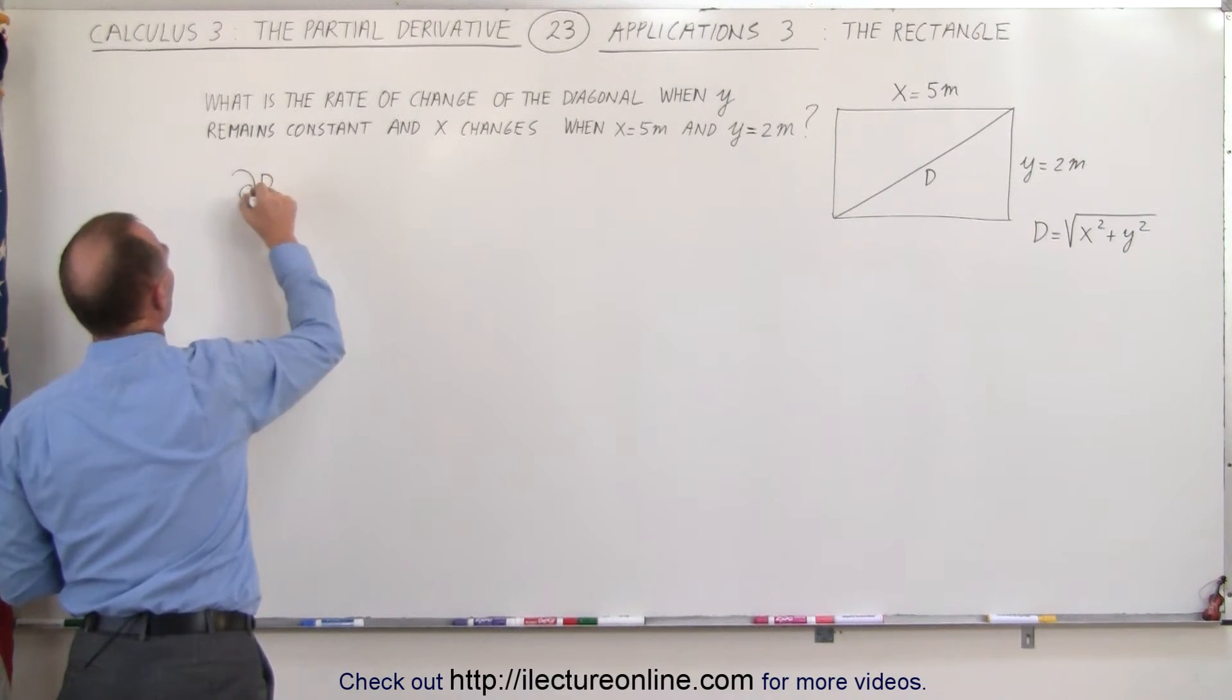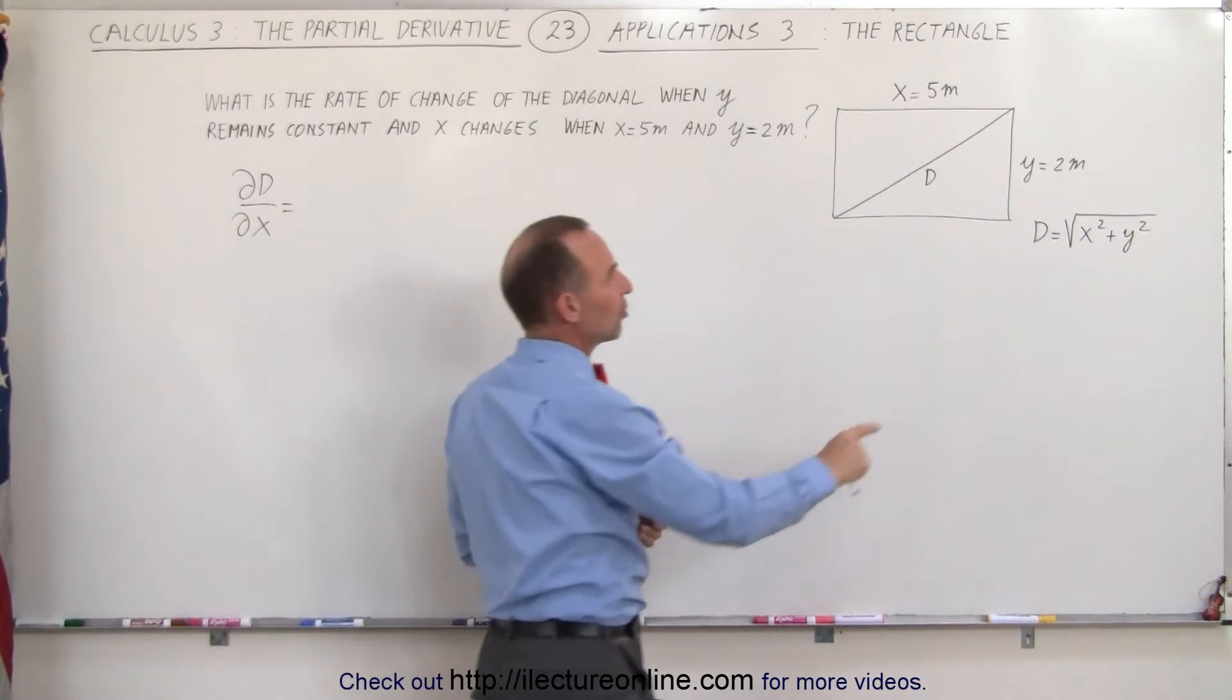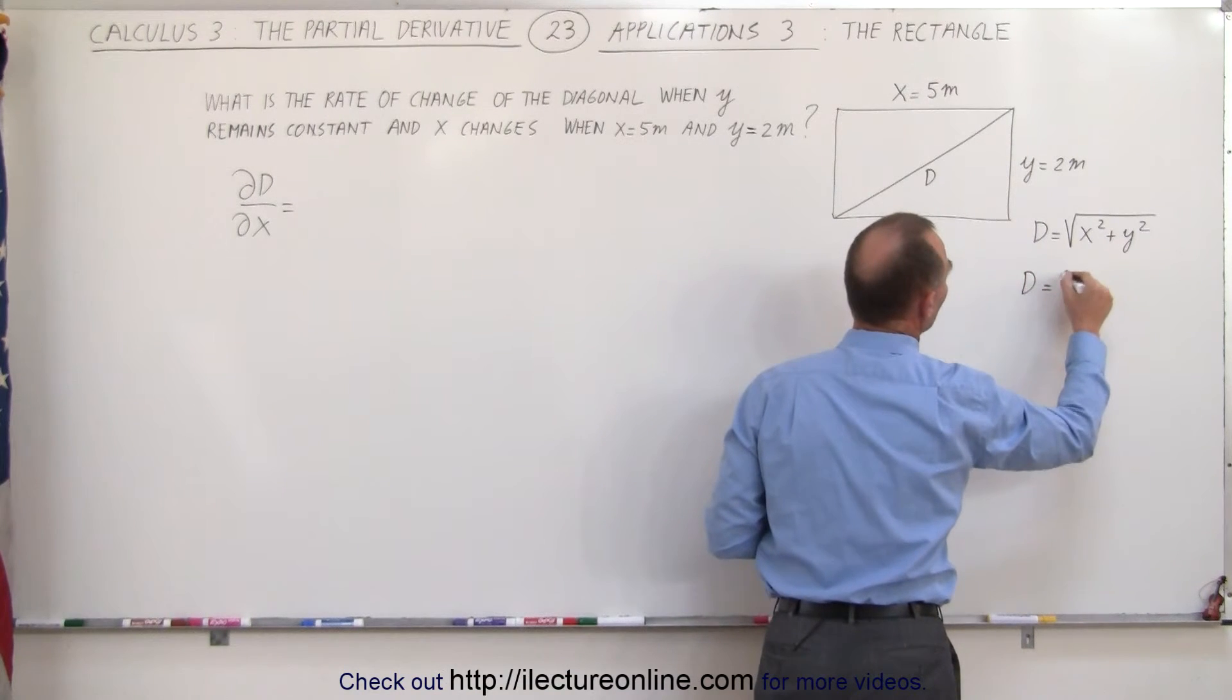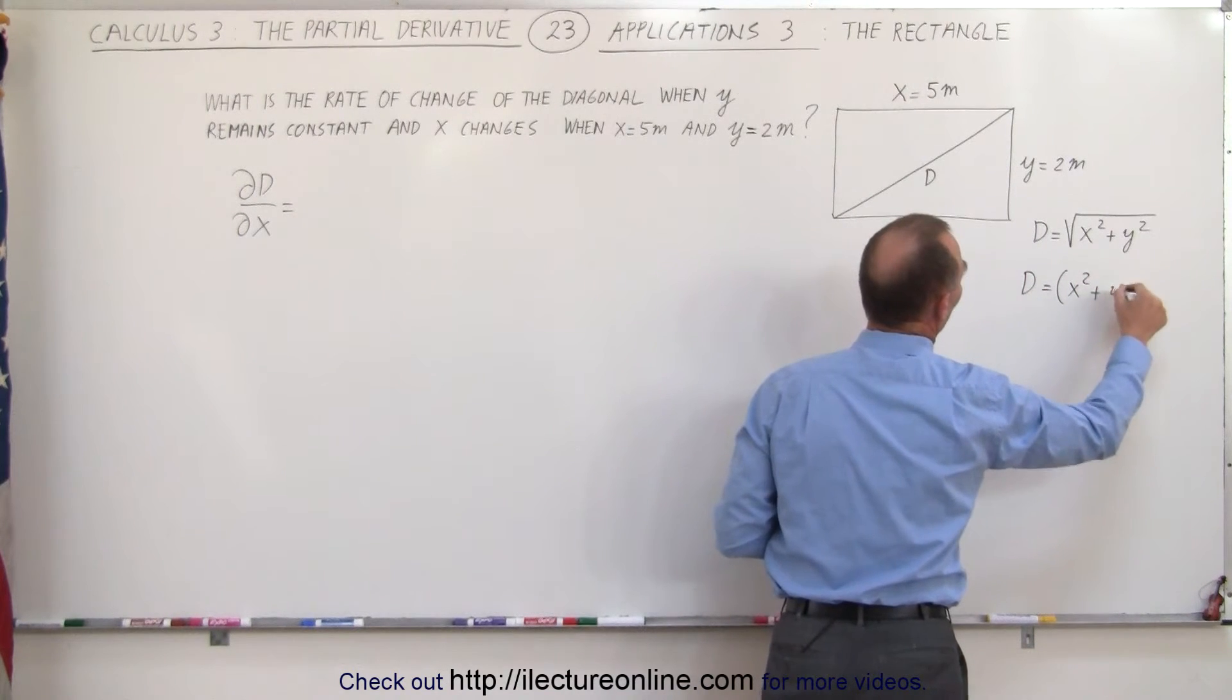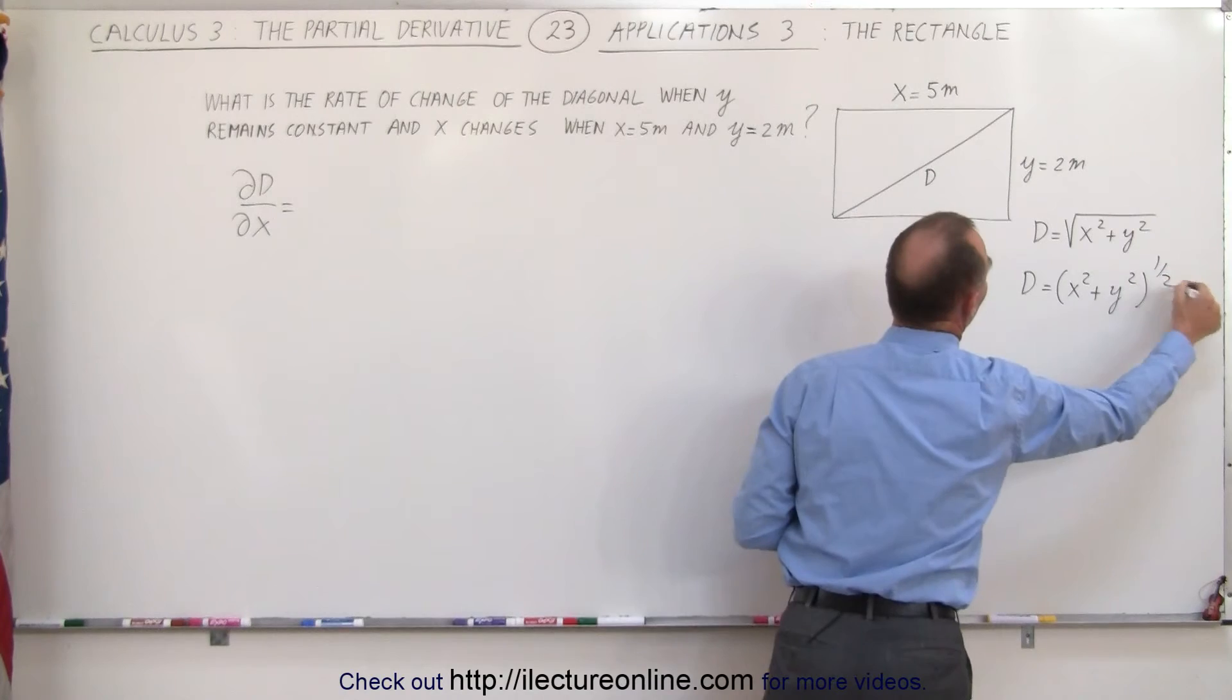Partial derivative with respect to x is equal to, of course here's the equation, we can say that diagonal is equal to quantity x squared plus y squared to the one-half power.